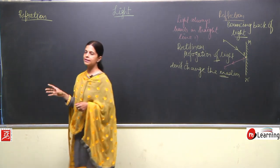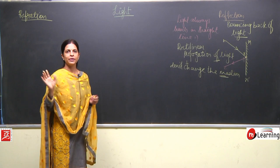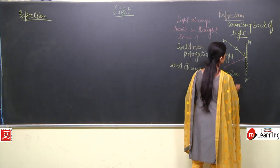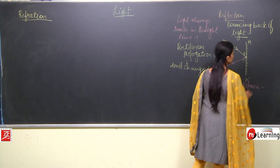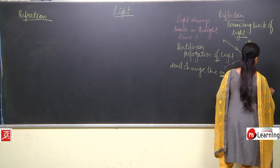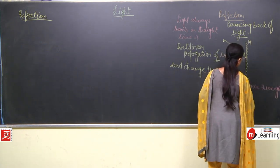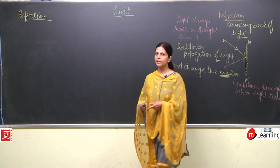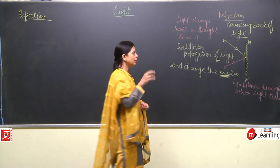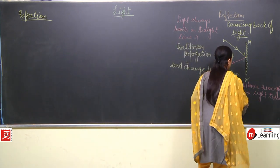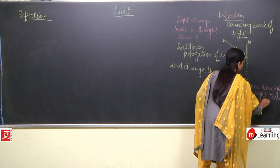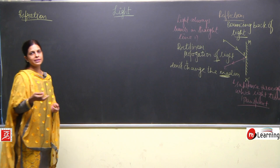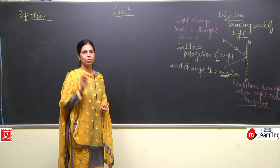Whenever the medium is not changed, it is certain that light will always travel in one straight line only. The meaning of medium is any substance through which the light travels. Now, light will pass through transparent materials easily; translucent materials allow light to pass to a very little extent; and opaque materials are those through which light will not pass — this we have already discussed.